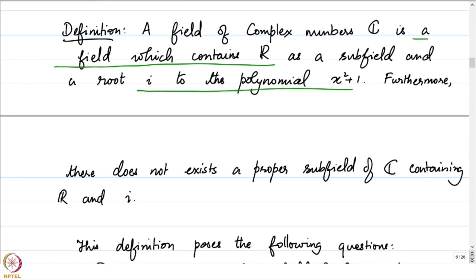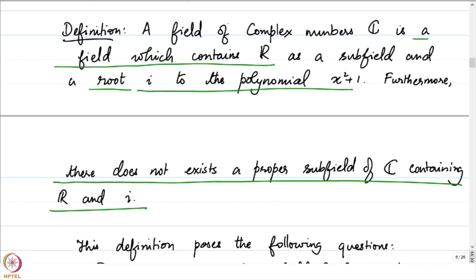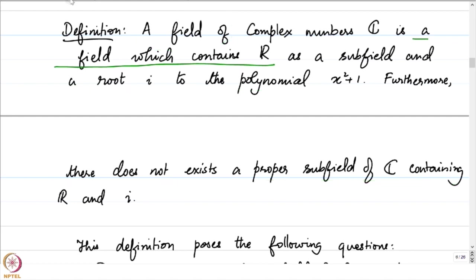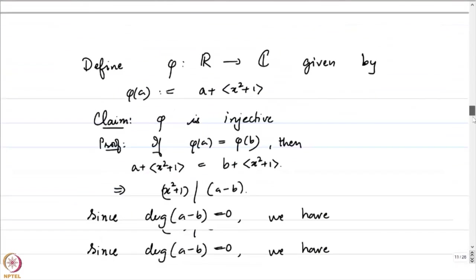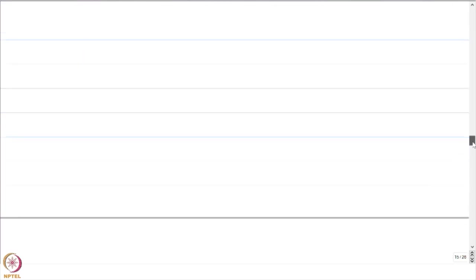So if we establish that it is indeed a field as well, we would have proved the existence of such a field of complex numbers. Let us now work towards proving that this commutative ring is indeed a field. In order to do that, let us focus on the polynomial x squared plus 1.